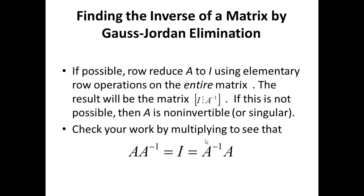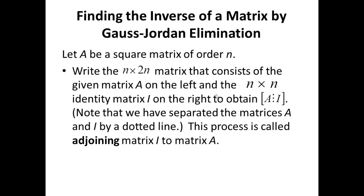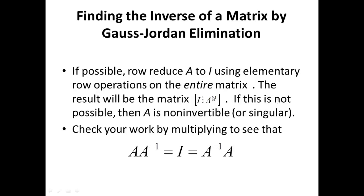Step 2: If possible, row reduce matrix A to matrix I using elementary row operations on the entire matrix. So by the time the matrix A reduces to the matrix I, what do you think would have happened to this? Well, matrix I gets transformed to A inverse. That's beautiful.